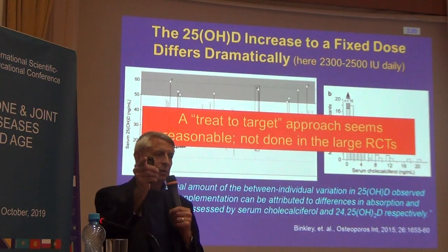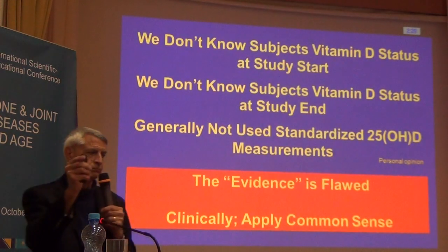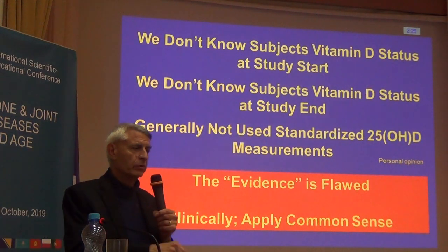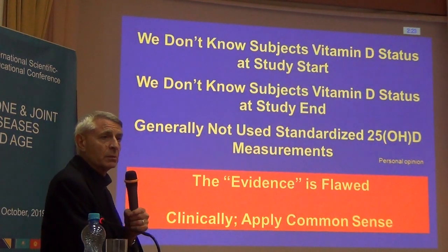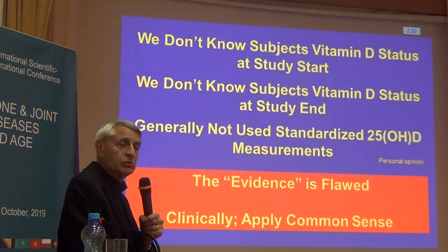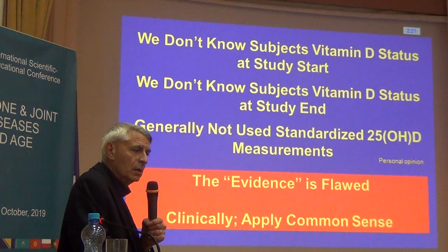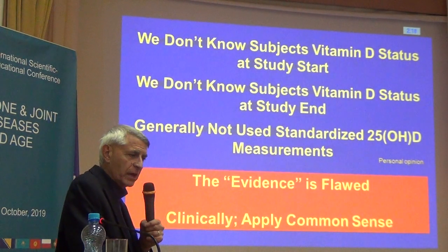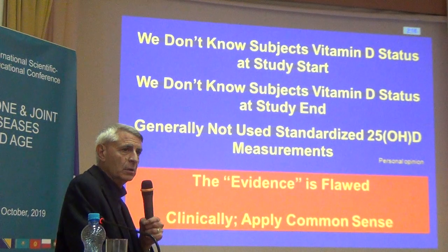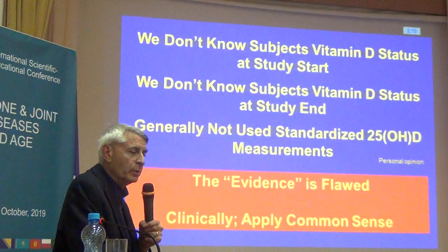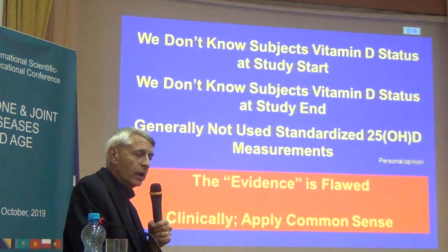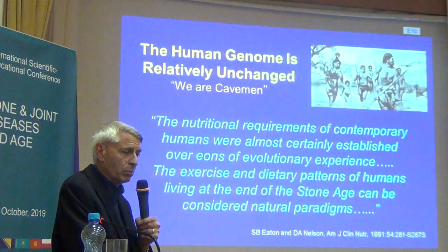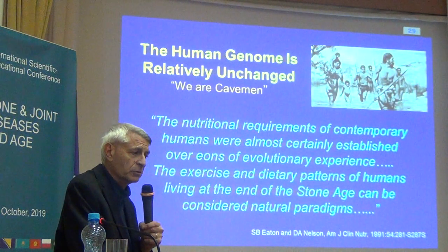This individual variability in response is probably due to differences in absorption, volume of distribution, and degradation. A treat-to-target approach seems logical but hasn't been done in the RCTs — they simply pick a dose and give it. We haven't figured this out because we don't know where subjects started, we don't know where they ended, and we haven't used standardized measurements. The so-called evidence is flawed, leaving us practicing medicine and applying common sense.